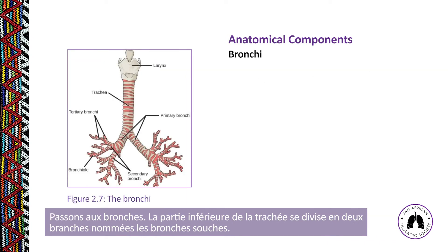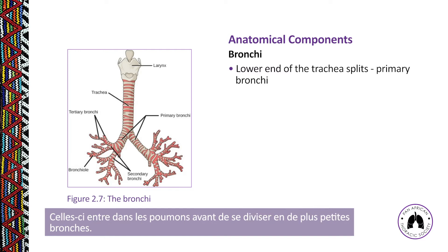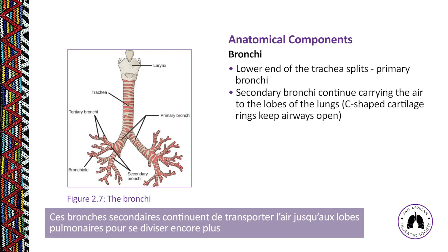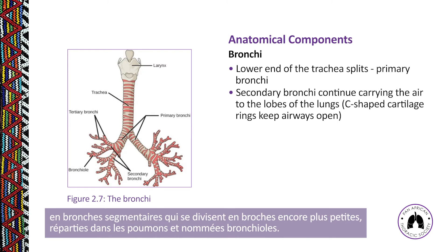At the lower end of the trachea, the respiratory tract splits into two branches called the primary bronchi. These run into each of the lungs before further branching into smaller secondary bronchi, which carry air to the lobes of the lungs, then split further into tertiary bronchi, which in turn split into even smaller sections spread throughout the lungs called bronchioles.